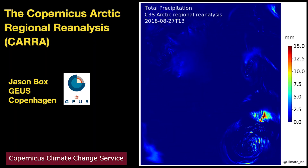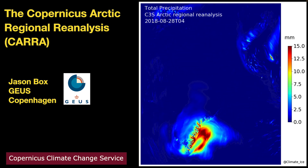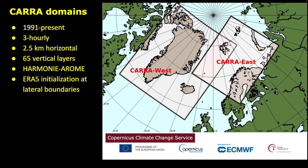With that background on what a reanalysis is, I'll be talking about the Copernicus Arctic Regional Reanalysis. CARA currently has two domains, west and east, with three-hourly data running from 1991 to present. The grid domains have 2.5 km horizontal resolution, which is very fine compared to ERA5 at 31 km. It has 65 vertical layers and a very fancy modeling system — this is convection-permitting, non-hydrostatic, state-of-the-art. The ERA5 data initialize CARA at the lateral boundaries, and within the domain there is additional data assimilation.